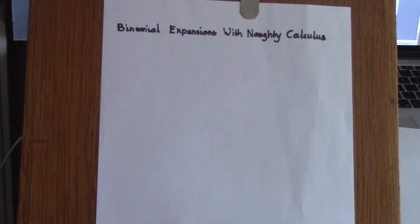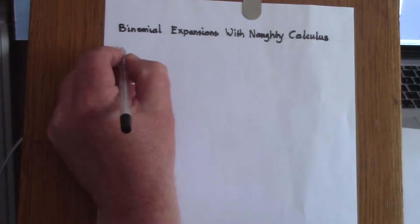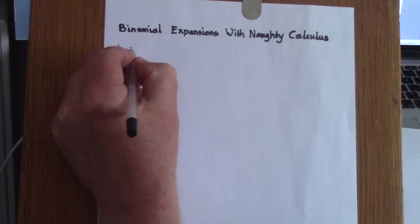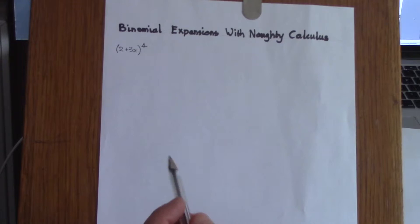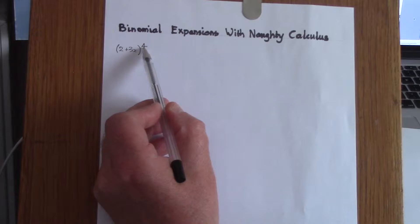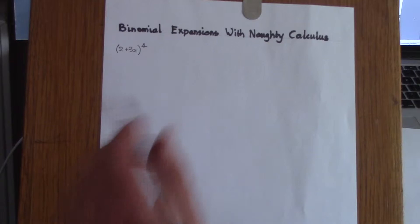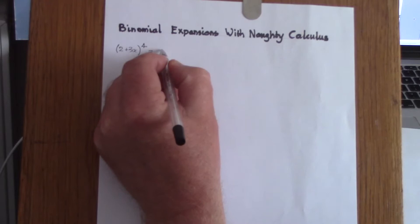Let's say that we have to expand (2 + 3x) to the power of 4. The power here is a positive integer, and the method I'll be showing is equally applicable to cases where the power is either negative, a fraction, or a negative fraction. The way it works is that we first set down the first term to the power.